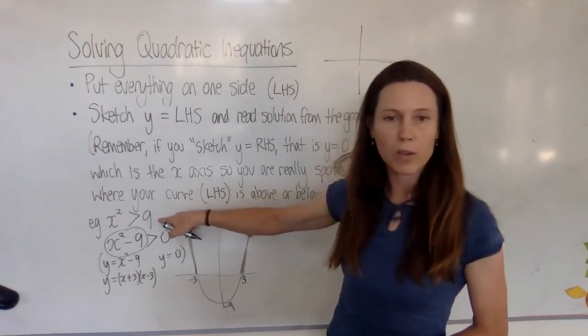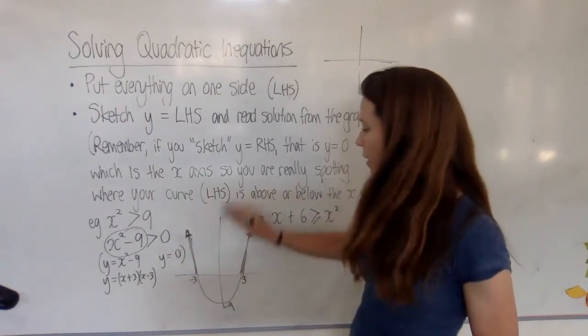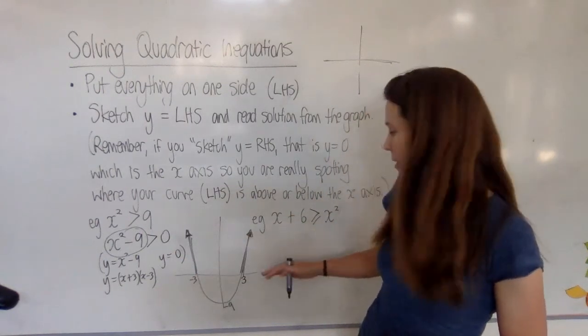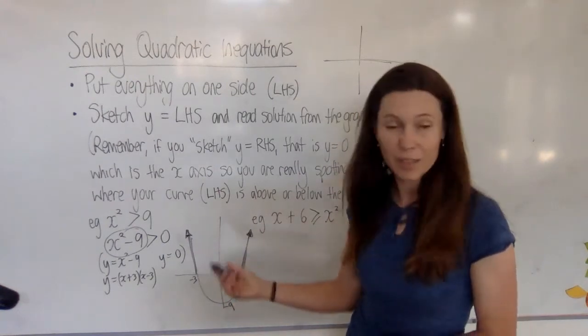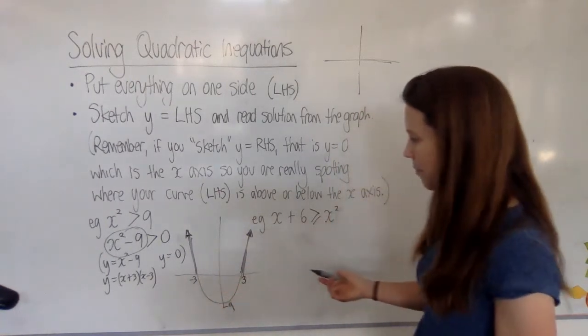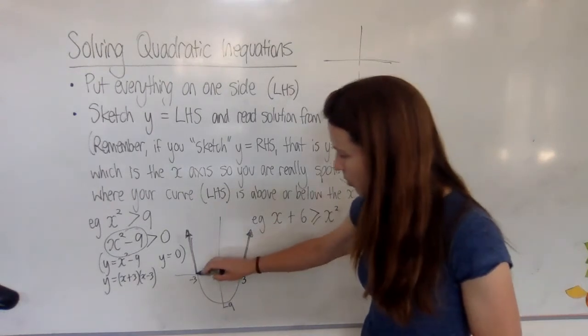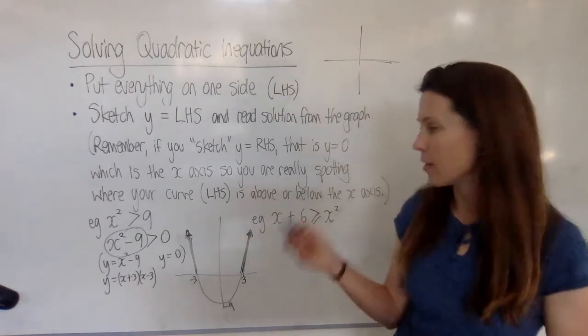Now notice there was no y at all in this part, and yet I've graphed it on a Cartesian plane that has x and y values as a trick to help me, because it's simply the easiest way to do it and get it right. The x values I want are either greater than 3 or less than minus 3, so that's my solution.